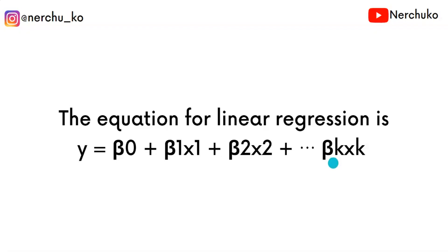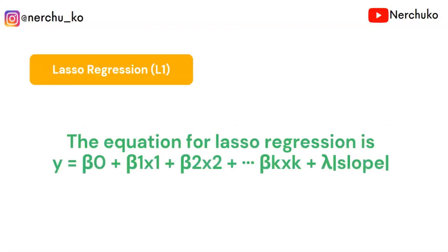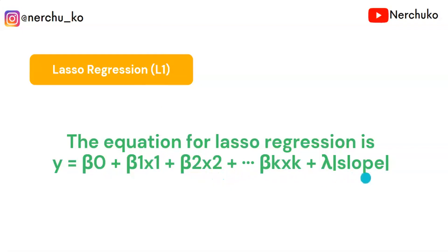We have L1 and L2 regularization. Our linear regression equation is: Y = β₀ + b₁x₁ + b₂x₂ + ... + bₖxₖ, where k is the number of independent features. We assign weights b₀, b₁, b₂, through bₖ. The goal is to reduce these weights.